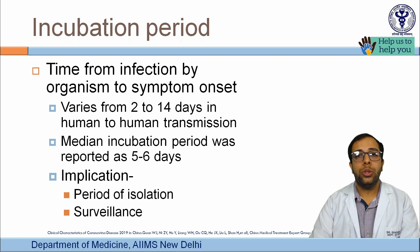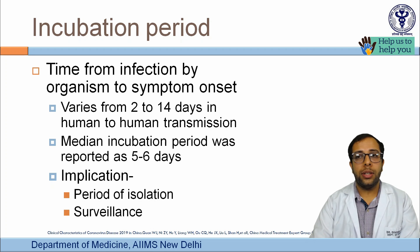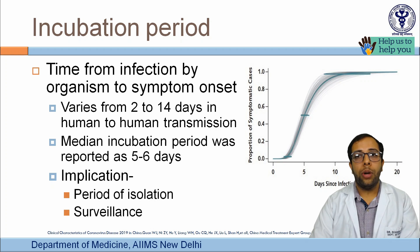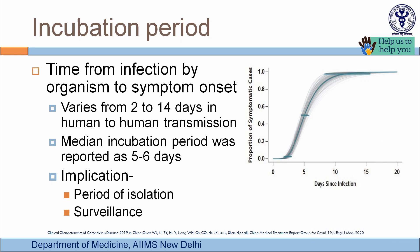If a person exposed to a positive patient remains asymptomatic throughout the incubation period, it is less likely they will develop the disease. For surveillance, all contacts of positive patients must be followed up for the maximum incubation period. The graph shows almost 100% of patients developed first symptoms within 10 to 15 days, with about 50% showing symptoms at 5 to 6 days — the median incubation period.